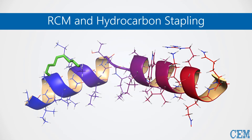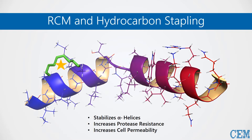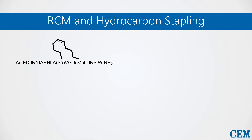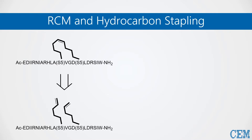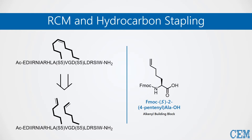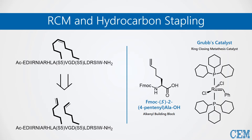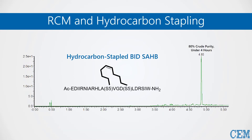Stapling is a form of cyclization which joins the side chains of two amino acid building blocks. It is known to stabilize alpha helices and has been shown to increase protease resistance and cell permeability. The most common method is hydrocarbon stapling. Looking at the peptide BID-SAB, it is cyclized via an alkyl chain with an internal alkene. We access this peptide by incorporating two building blocks with terminal alkenyl R groups, such as the 4-pentenyl alanine derivative denoted S5, then subjecting it to RCM with Grubbs first-generation catalyst. By automating this approach, we were able to access BID-SAB in 80% crude purity in less than 4 hours, with stapling performed by heating to 40 degrees Celsius with Grubbs catalyst for one hour.